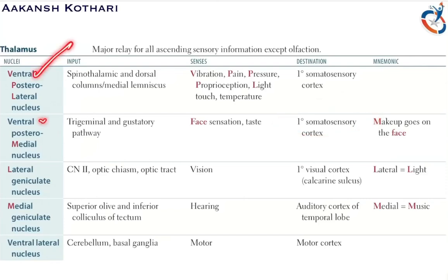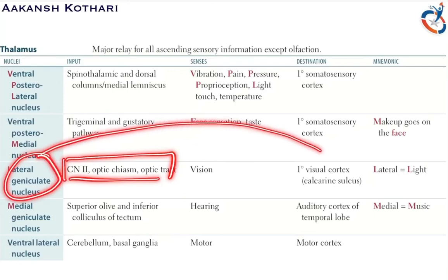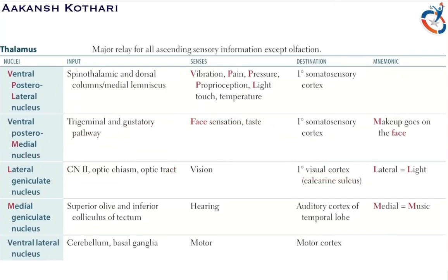The lateral geniculate nucleus is an important part of the visual pathway. Its inputs come from cranial nerve 2, the optic chiasma, and the optic tract, making it responsible for vision. These inputs are relayed in the lateral geniculate nucleus and sent to the primary visual cortex in the calcarine sulcus.